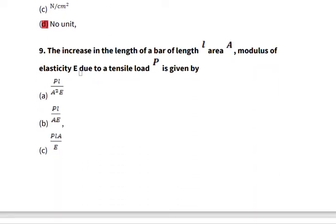Number nine: the increase in length of a bar L and area A modulus of elasticity E due to tensile load P is given by. We want the formula for calculating the increase in length, that is the elongation, and we know that elongation is given by the load times the length over the area multiplying the elasticity. That is B, P L over A E.